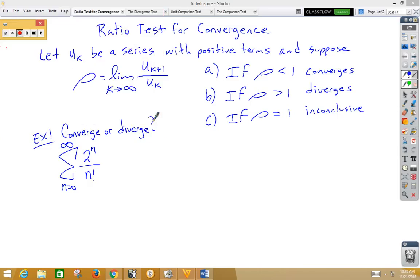In this video, let's look at the ratio test for convergence. The ratio test says let u of k be a series with positive terms, and suppose that rho, this is the letter rho if you didn't know that,